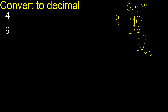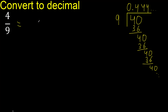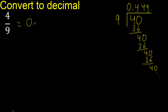Multiply by 4, get 36, subtract, complete. The pattern repeats — therefore 4 repeats. Finish: the answer is 0.4444... repeating.